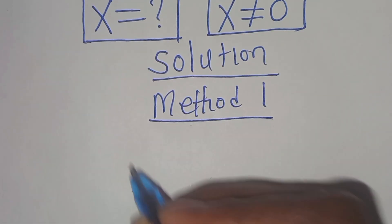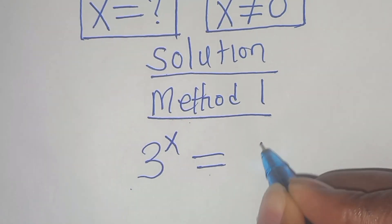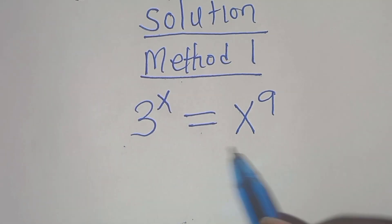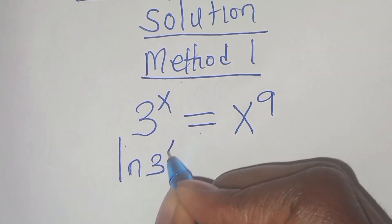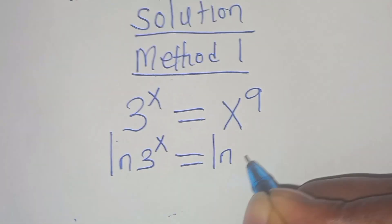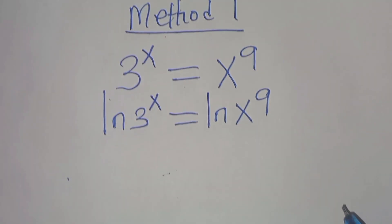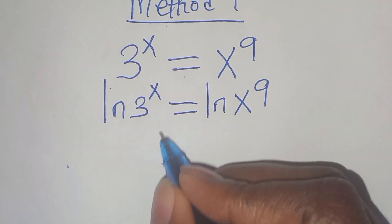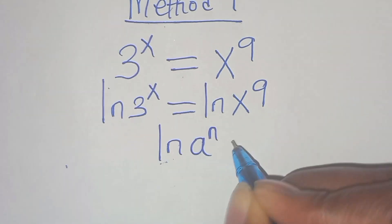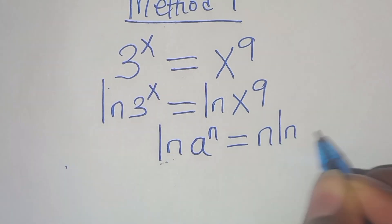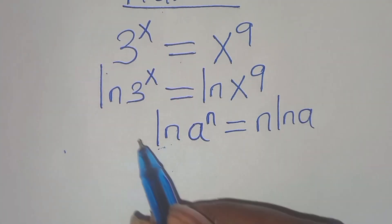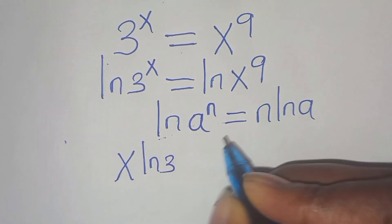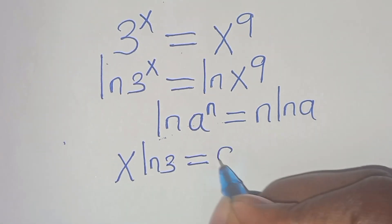Here we have 3 to the power of x, equal to x to the power of 9. The first step is to apply the natural logarithm on both sides, so that we have ln of 3 to the power of x, equal to ln of x to the power of 9. Using the property ln(a^n) = n·ln(a), applying this logarithm property, we have x·ln(3) equal to 9·ln(x).